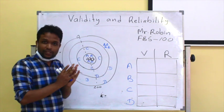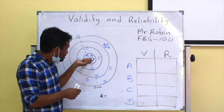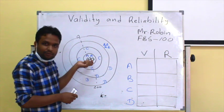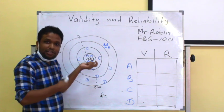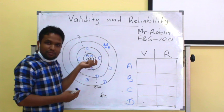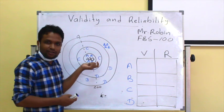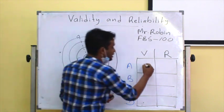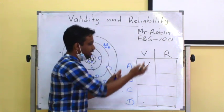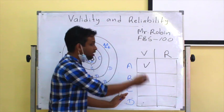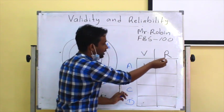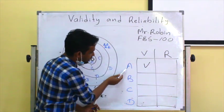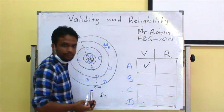All four times test A produced almost similar values to 100. As it produced similar values to 100, we can call that a valid test. In this table, this column represents validity, this represents reliability, and these are the screening tests A, B, C, and D.